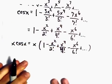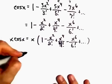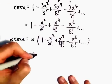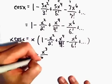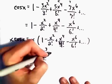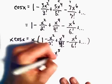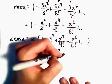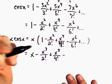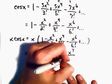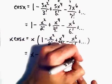So what we'll be left with when we distribute will be x minus x to the third over 2 factorial plus x to the fifth over 4 factorial minus x to the seventh over 6 factorial, etc.